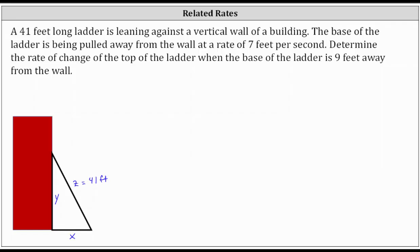We're also told that the base of the ladder is being pulled away from the wall at a rate of seven feet per second, which would be in this direction here. Notice X is increasing at a rate of seven feet per second, which we state as dx dt equals seven feet per second.